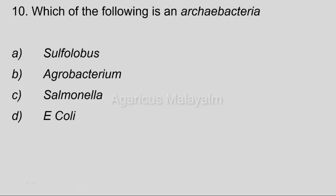Tenth question: Which of the following is an RK bacteria? Answer options — Option A: Sulpholobus. Option B: Agrobacterium. Option C: Salmonella. Option D: E. coli. Correct answer: Option A, Sulpholobus.